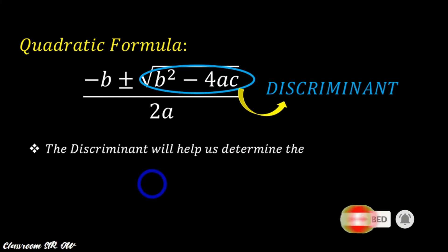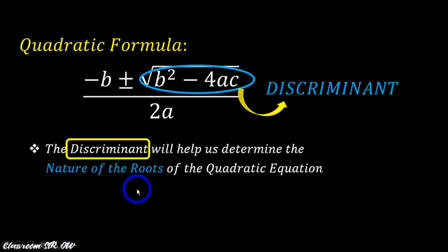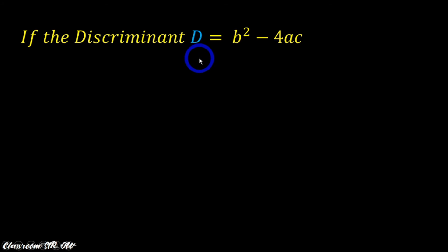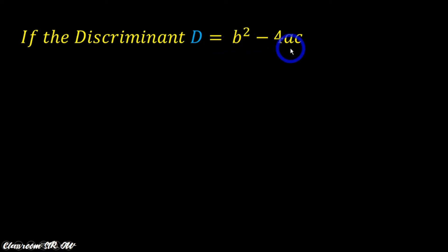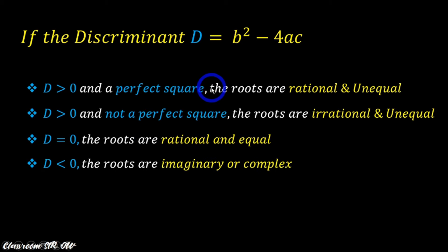The discriminant will help us determine the nature of the roots of the quadratic equation, which is our focus in this session. Let us proceed to the conclusion we can make if the discriminant d — the variable representing the discriminant — is equal to b squared minus 4ac. The following are the summary.